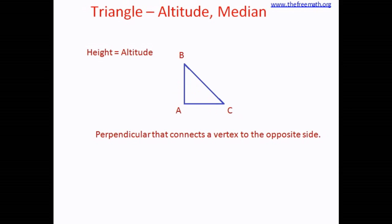That was an acute triangle, but what about a right triangle? If you consider a perpendicular from vertex B to the opposite side AC, that perpendicular is actually the side BA or AB. That means in a right triangle, the perpendicular or the altitude is one of the sides of the triangle. So the altitude may not always be inside the triangle — it could also be one of the sides.